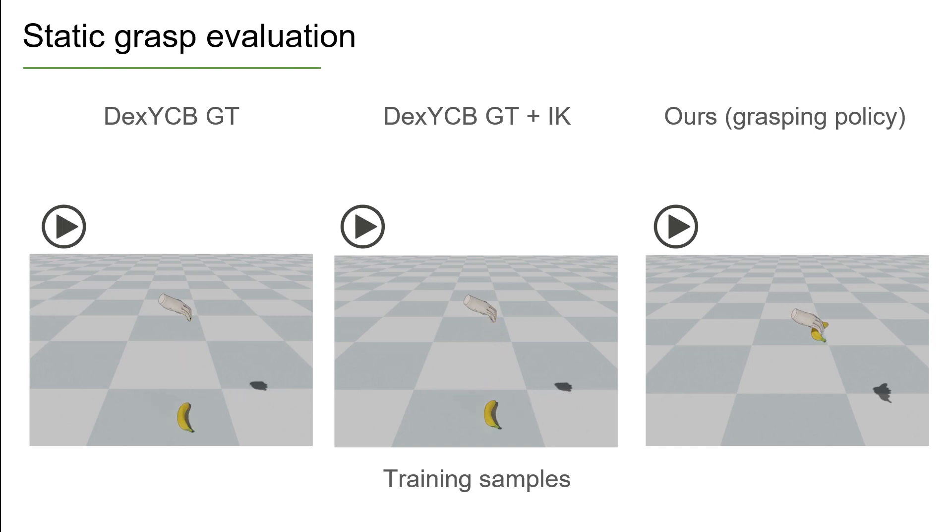Here, we show that our method leads to improved grasps when trained with grasp labels from the DEX YCB ground truth annotations.